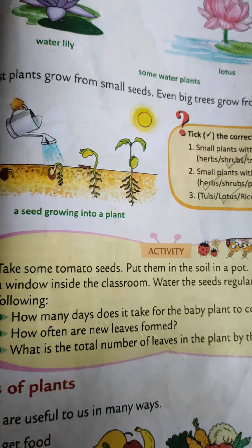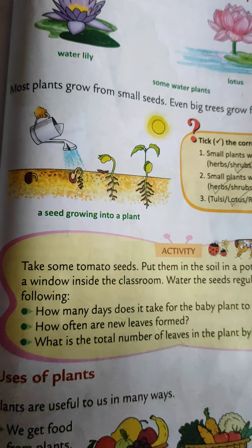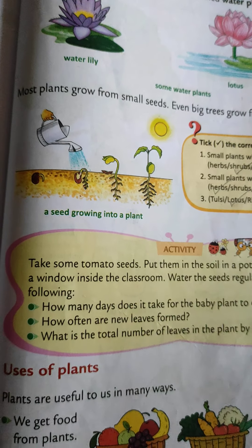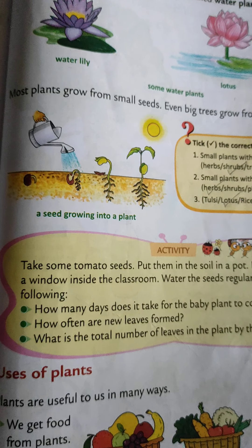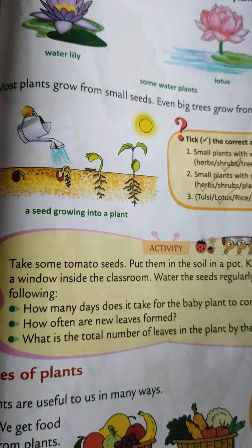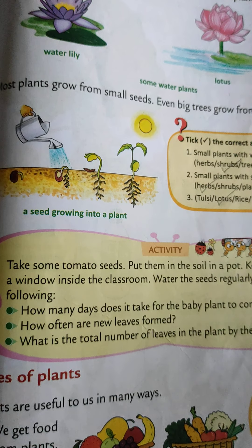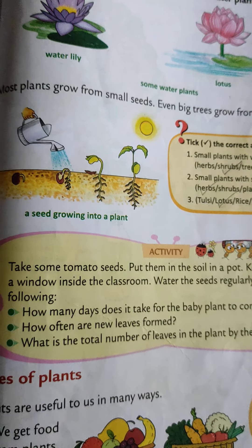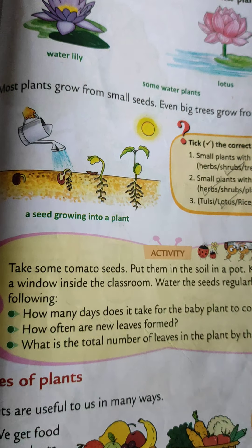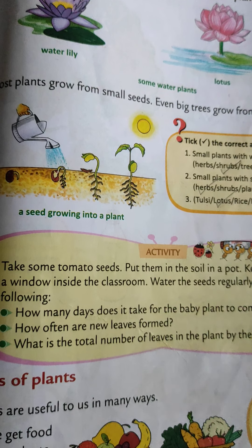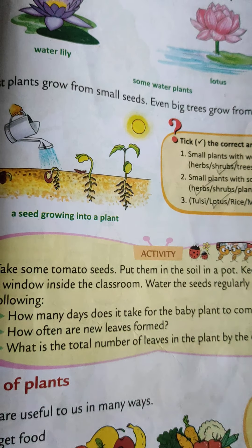Hello dear students of grade 1. Our chapter number 7, World of Plants, is going on. In the last video we had learned about the different types of plants. We had learned about trees, herbs, shrubs, and water plants.